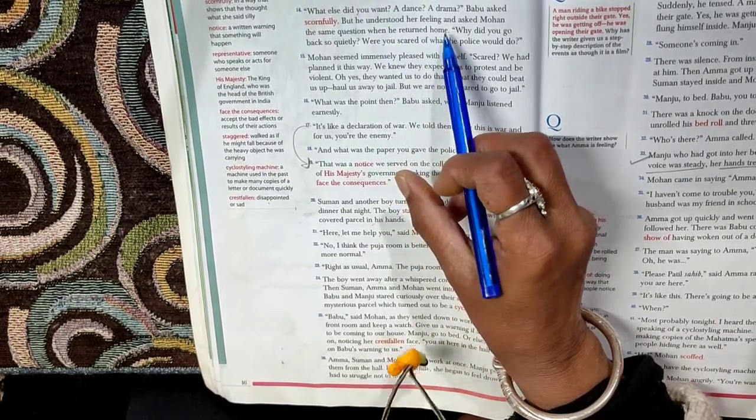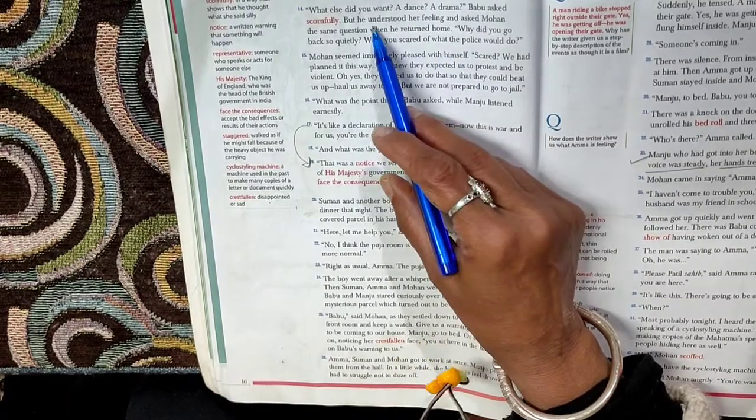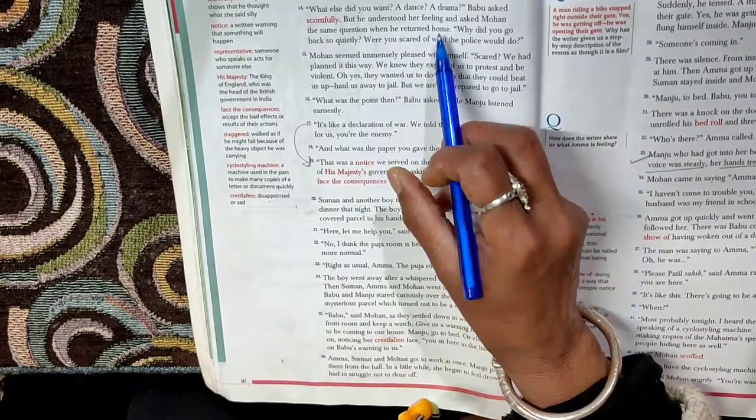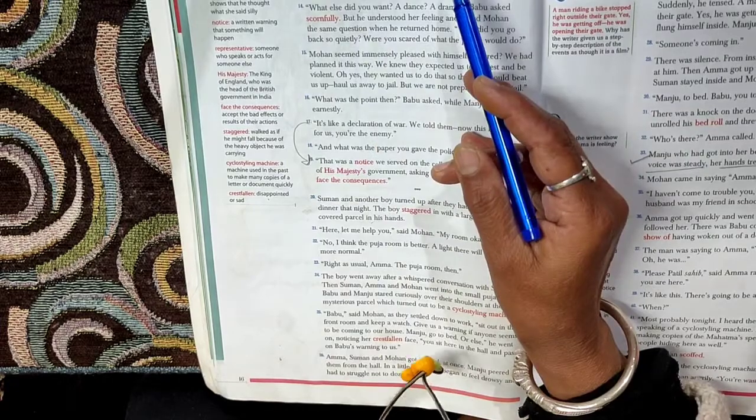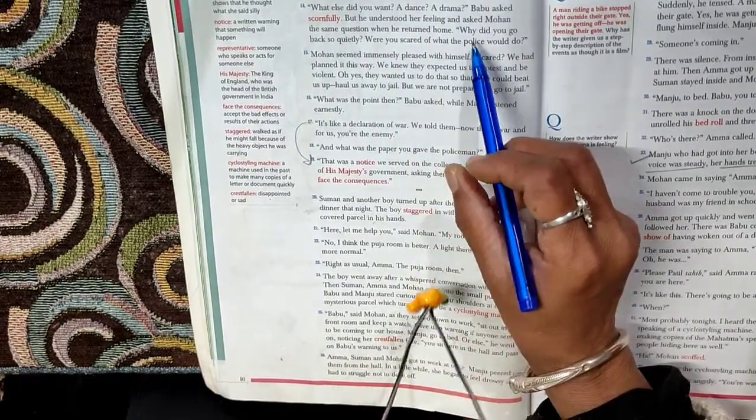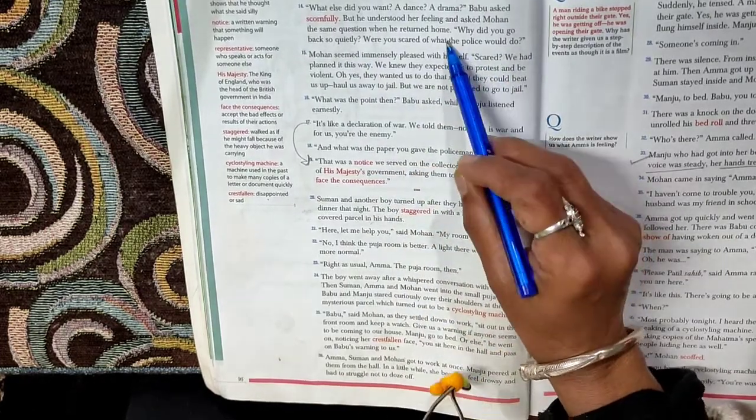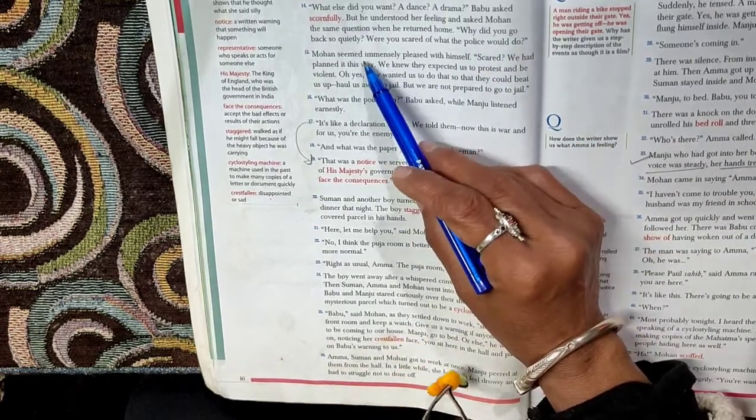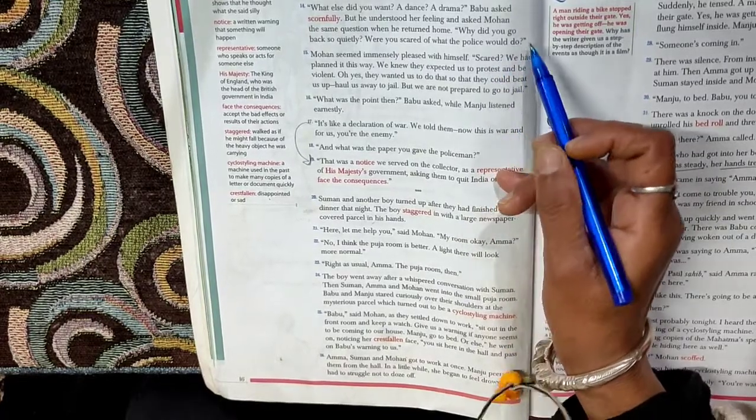But he understood her feeling and asked Mohan the same question when he returned home. Even Babu felt the same. So he asked his elder brother Mohan the same question: is that all? This is what you had called us for to see in the procession? Why did you go back so quietly? Were you scared of what the police would do? Were you all scared of the police? That the police would give you some punishment?